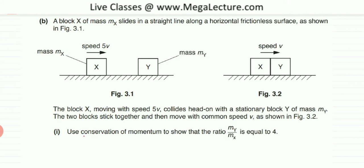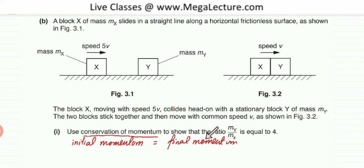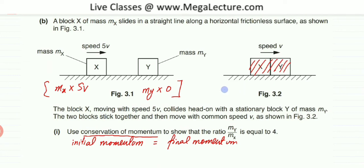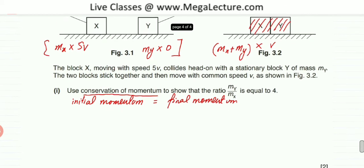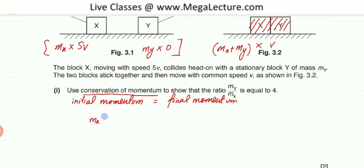The law of conservation of momentum states that initial momentum equals final momentum. The initial momentum is MX into 5V plus MY into 0, since MY is stationary. The final momentum is the combined mass MX plus MY moving together at velocity V. So we equate: MX × 5V = (MX + MY) × V.